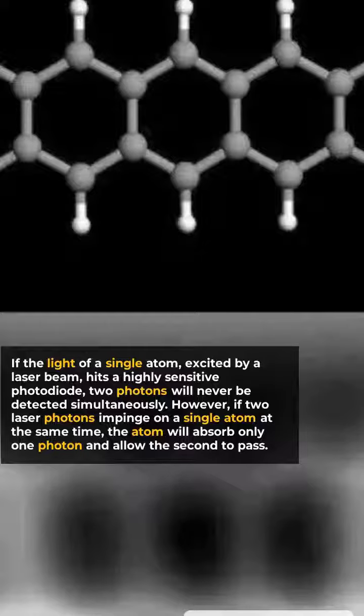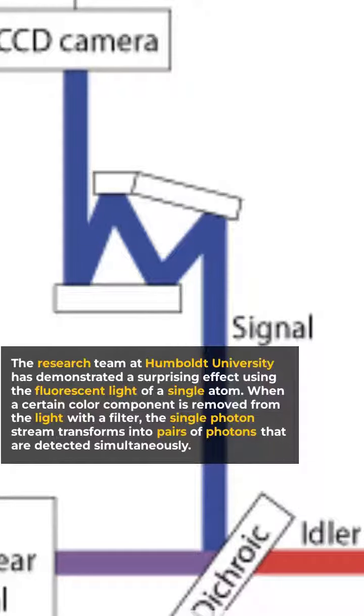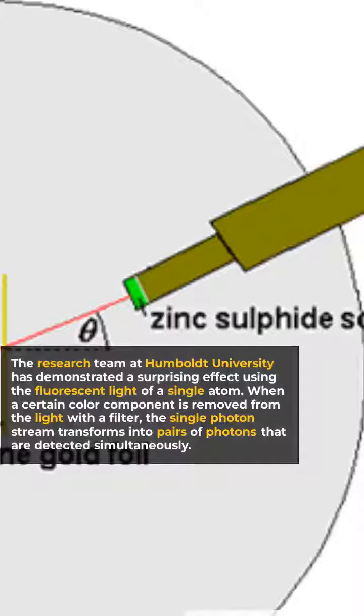However, if two laser photons impinge on a single atom at the same time, the atom will absorb only one photon and allow the second to pass. The research team at Humboldt University has demonstrated a surprising effect using the fluorescent light of a single atom.